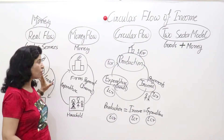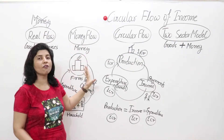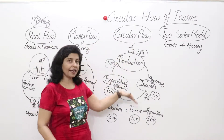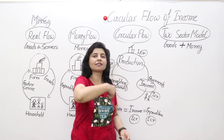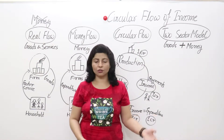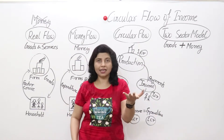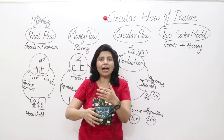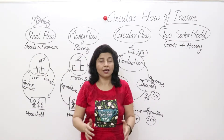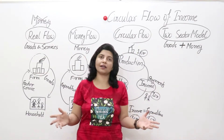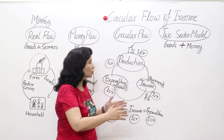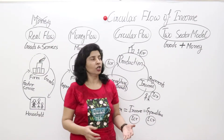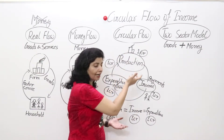To recap: real flow is the flow of goods and services only — no money. Money flow is the flow of money. Circular flow is the flow of money in an economy that moves in a circle. Money never stays in one hand — you can never hold money for long. You have to spend it on goods and services. If you don't spend, you cannot survive. So to survive, you spend money, and to spend, you earn money. This is a cycle that moves on endlessly.